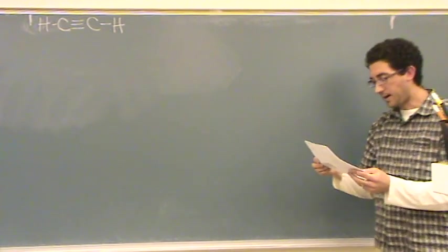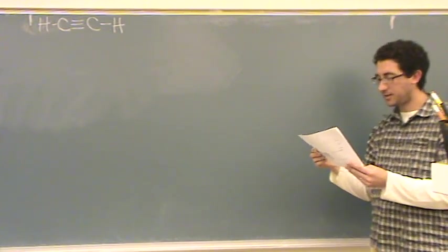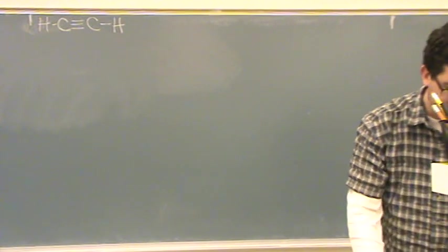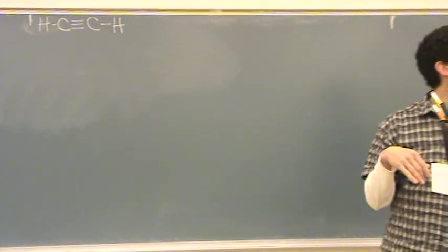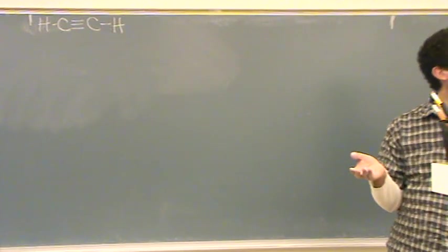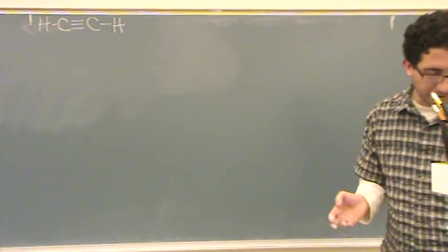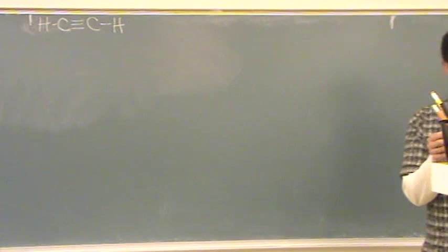This is ethyne, or it's also called acetylene. They draw out the Lewis structure for you. It's C2H2. Lewis structure's drawn out. They ask you a couple questions about this.